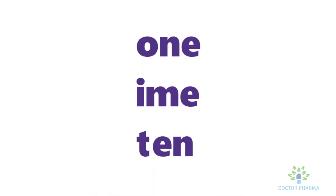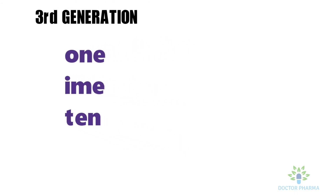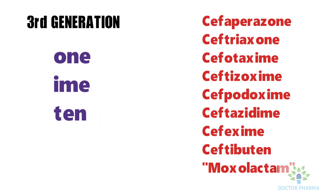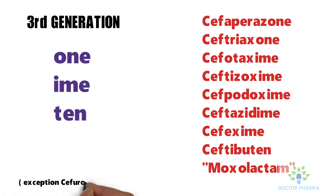The third generation cephalosporins have the common letters O, N, E, I, M, E, T, E, N. For example: cefoperazone, ceftriaxone, cefotaxime, ceftizoxime, cefpodoxime, ceftazidime, cefixime, ceftibuten, and moxalactam.